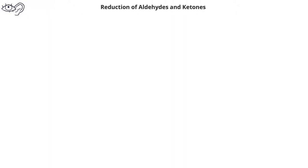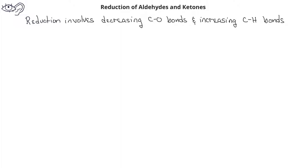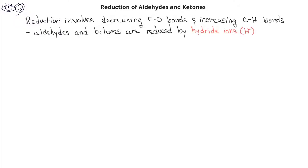You should recall from previous videos that for organic compounds, a reduction reaction involves reducing the number of carbon-oxygen bonds in a compound and at the same time increasing the number of carbon-hydrogen bonds. Aldehydes and ketones can undergo reduction reactions in the presence of hydride ions or hydrogen anions. The source of the hydride ions will be a compound known as sodium borohydride, NaBH4.